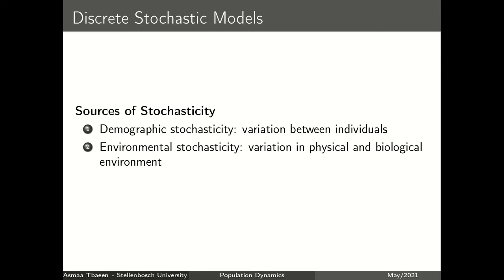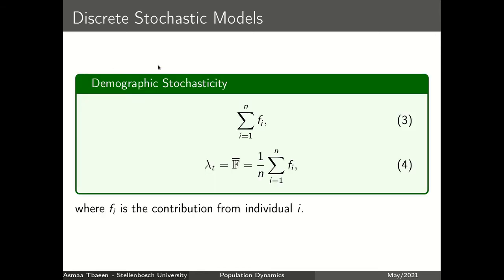Stochasticity implies unpredictability, or the inability to predict the future state precisely, but we can describe it in a probability distribution form. In the next slide I am going to show you how we evaluate or estimate the population growth rate in stochastic models. Considering the demographic noise, if we assume that each individual's fitness in the population is given by fi, where i represents individual i, then the population growth rate lambda_t would be the average of all individual fitnesses at time t.